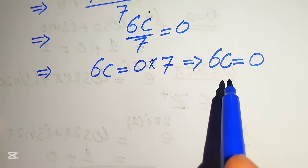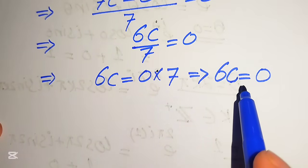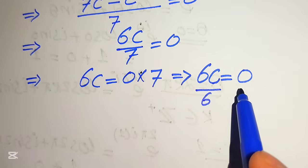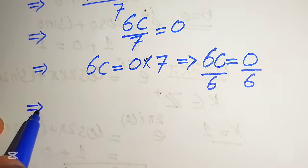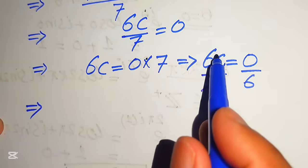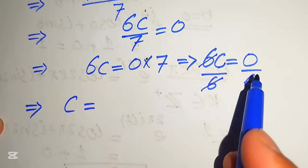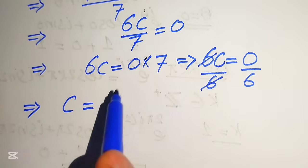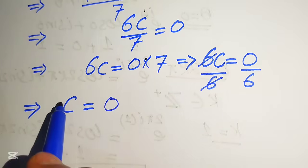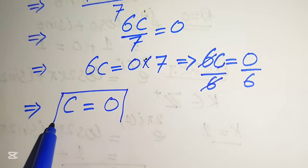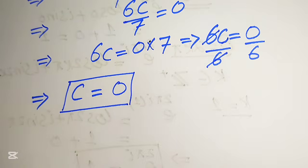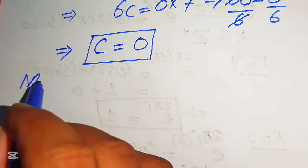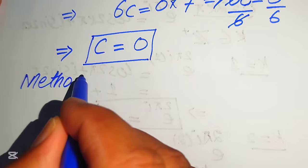To find the value of c, we divide both sides by six. The six cancels out on the left, giving c equals zero over six. Since zero over any number is always zero, we get c equals zero. This is the final answer of the first method.